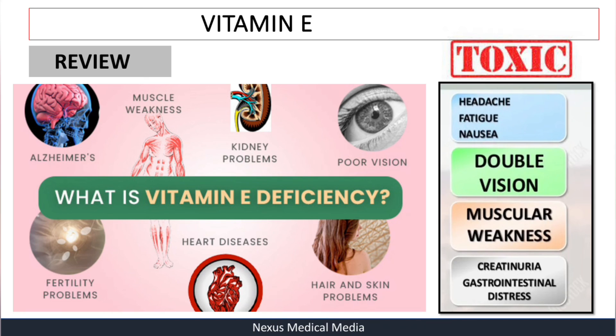And for toxicity, one more time: headache, fatigue, nausea, double vision, muscular weakness, creatinuria, and gastrointestinal distress. That's all about vitamin E. Thank you so much for watching. If you like this video, please give it a thumbs up and don't forget to subscribe.